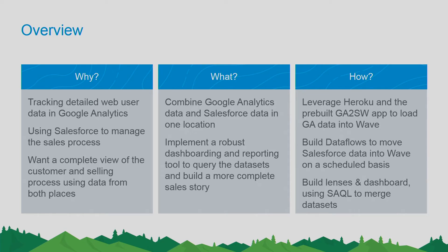So what are we going to do to build that? We have our data sources — the next piece is how do we integrate those two and bring them together. We're going to build some sort of integration layer, and on top of that, a robust reporting and dashboarding tool. In our integration layer, we built a custom Heroku app that will do a lot of the Google Analytics transformations and push those into Wave. On the other side, we're going to use Salesforce's standard data flows to move Salesforce data into Wave. And then for our robust analytic reporting tool, we're going to use Salesforce Wave.